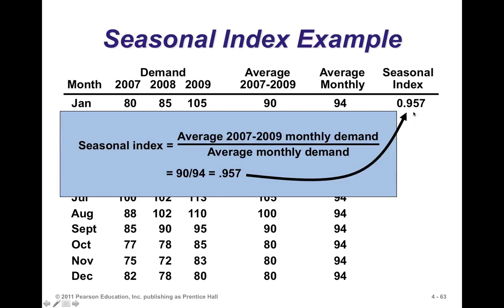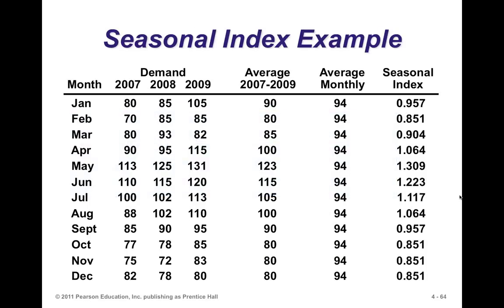For January, the seasonal index is 0.957. That simply means if we now have a new monthly average demand, we adjust it by 95.7% — we bring it down a little bit. So the next time, all we have to do is predict the average monthly demand for the next year, 2010 for example, and multiply each value by the corresponding seasonal factor to estimate demand for that period.